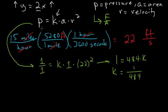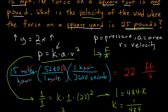And with this, we can rewrite this equation for pressure. So p is equal to the area times the velocity squared divided by 484. And with this updated equation, we can solve what the problem is asking for.